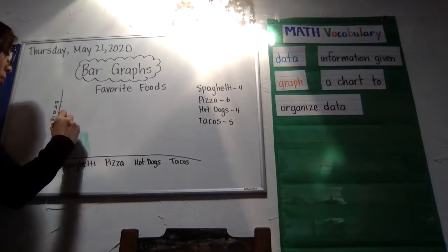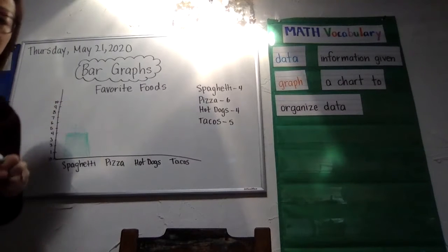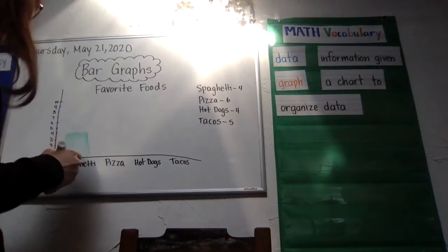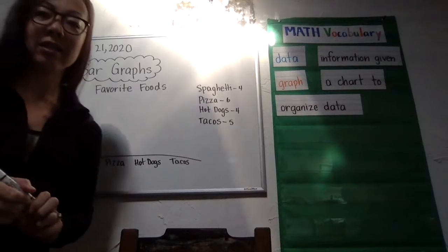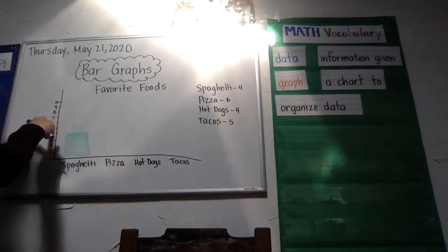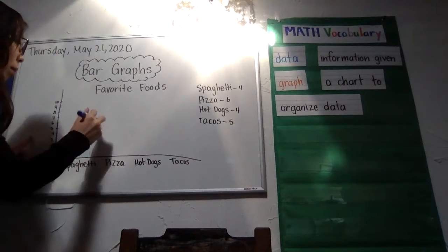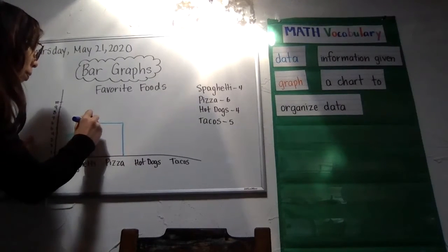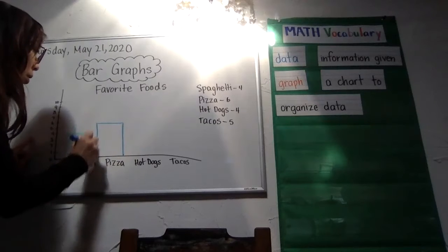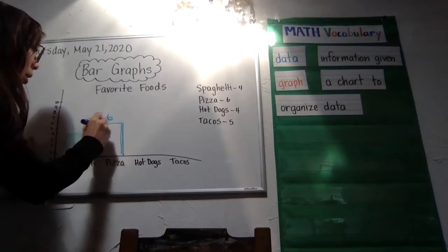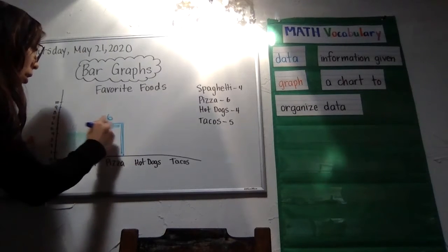Then I can put the number four on top of it. For pizza, six people voted for it. So I'm going to find the number six on my bar chart and make a bar that goes up to the number six. So I don't get confused, I'm going to put the number six above it, and just color it in.